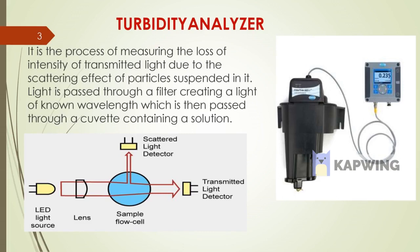In this figure you can see there is an LED light source, lens, sample cell, flow transmitted light detector, and a scattered light detector. This is the turbidity sensor and transmitter. In the sensor, the same process as shown in the figure is applied.